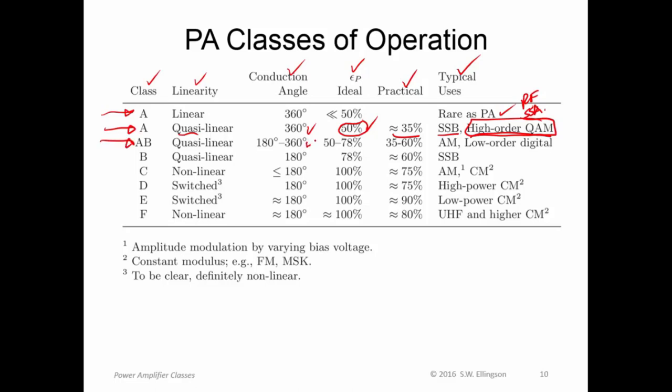Class AB is kind of like class A, except with a reduced conduction angle, which means you get an efficiency somewhere between that of class A and class B. So somewhere between 50% and 78%. In practice, somewhere between 35% and 60%. And that's commonly used for AM modulation, and for low order digital modulations like BPSK.